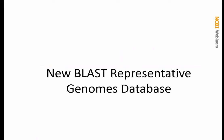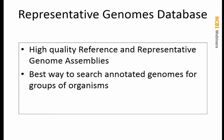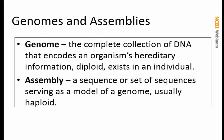The other database I want to mention is a nucleotide database: the Representative Genome Database. It contains high-quality reference and representative genome assemblies. It's the best way to search annotated genomes for groups of organisms. Just a couple of definitions: we use the word 'assembly' to mean a sequence or set of sequences that serve as a model of a genome for a species or strain — usually a haploid representation. When we say the genome sequence of the human, we mean the assembly GRCh38.